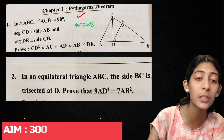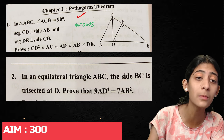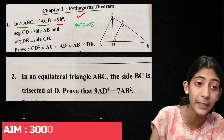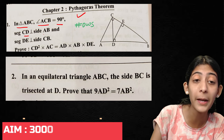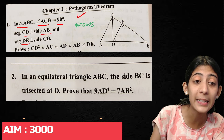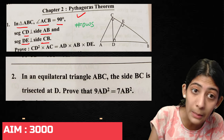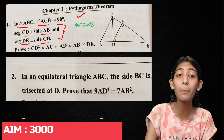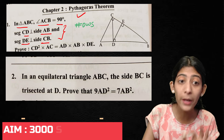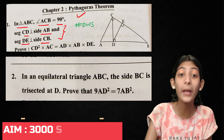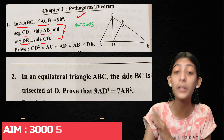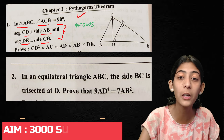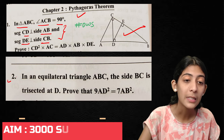Second question: In triangle ABC, angle ACB is equal to 90 degrees. Segment CD is perpendicular to segment AB and segment D is perpendicular to segment CD. Prove that CD² × AC² = AD² × AB² × D². This figure is already given — you have to write out the given information and prove the result.